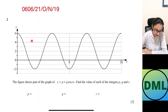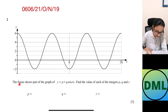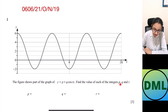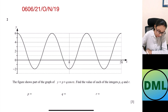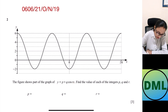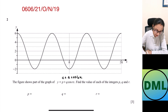Let's see our first question. This is the graph we have in front of us. They show that the figure shows the part of the graph of y equals p plus q·cos(rx). Find the value of each of the integers p, q and r. If we compare this with our general equation — our general equation is c plus a·cos(bx) — the value for a is q here.